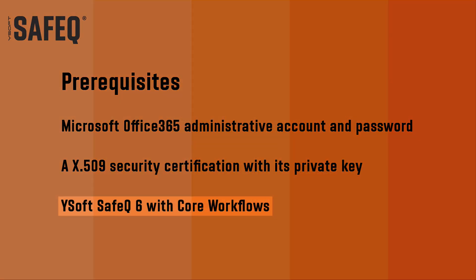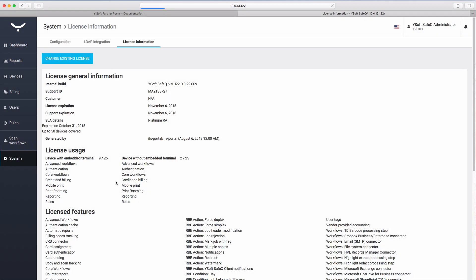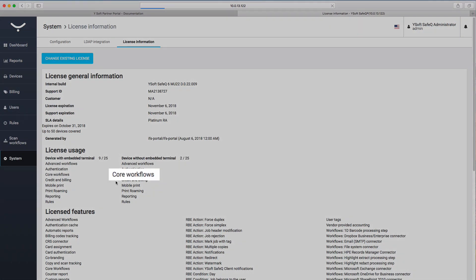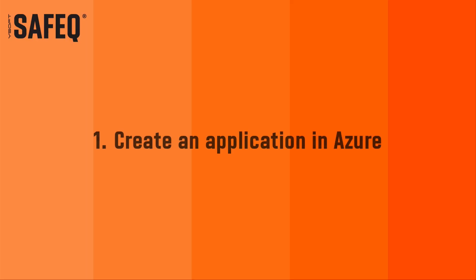And YSoft SafeQ 6 with Core Workflows. Check to make sure you have YSoft SafeQ 6 installed with the Core Workflows module. Let's get started with step one: creating an application in the Azure portal.